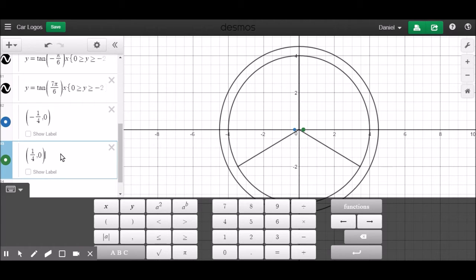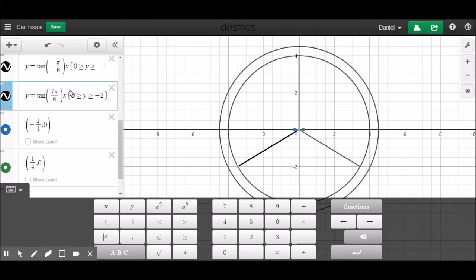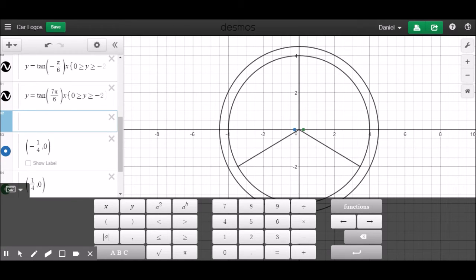First we need to find what the slope of the line needs to be. So the horizontal distance is 1/4 and the vertical distance is 4, which means the slope has to be 4 times 4, which is 16. So we have y equals 16x, and we're going to move up 4 units.